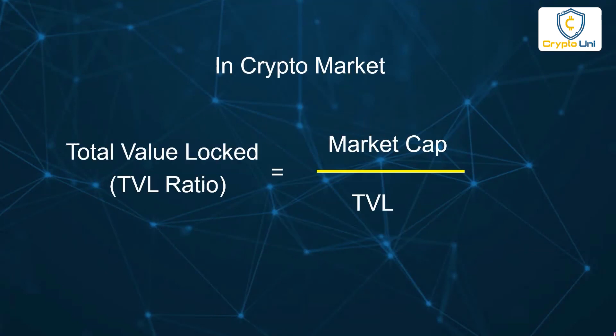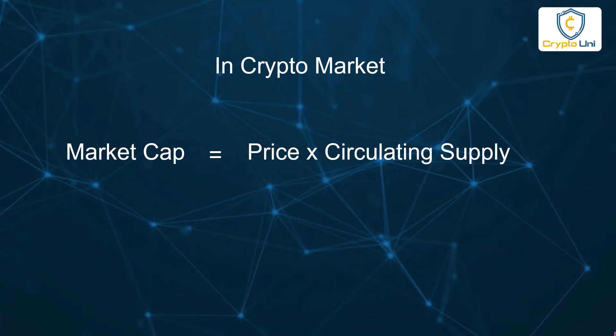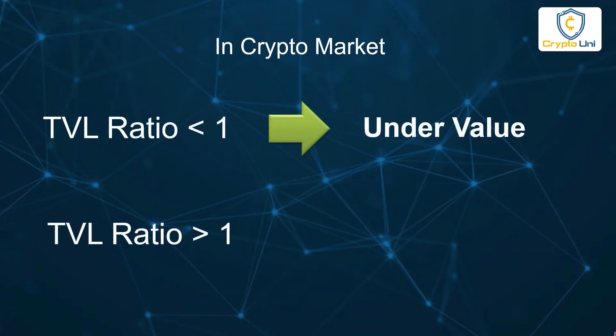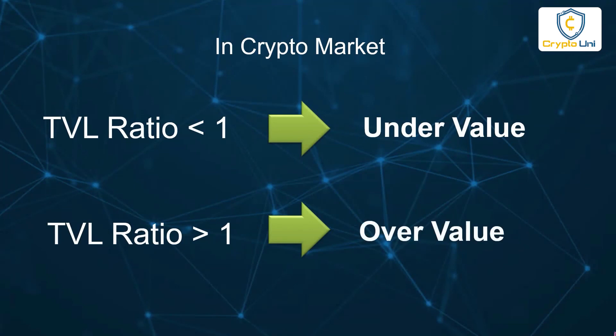A similar case exists in the crypto market as well. The TVL ratio is equal to market cap divided by total value locked. Market cap is equal to the current price multiplied by circulating supply. Theoretically, if the TVL ratio is above 1, we can consider it overvalued, and if it is under 1, it is undervalued. In real cases, it is not so simple to say under or overvalued by looking only at the TVL ratio.